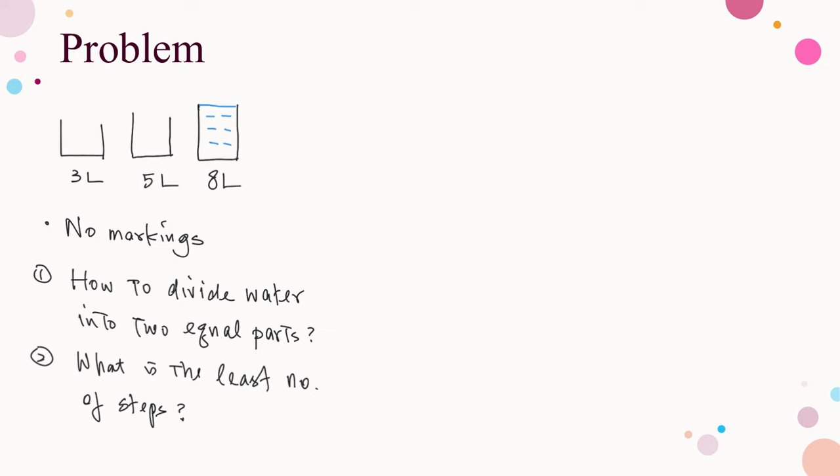This problem can be solved simply by trial and error. You may pause the video and try on your own first so that you have a better idea about the problem. During your trial, you might come across the situation of going back to some previous state. Yet we are asked to divide the water into two equal parts with the least number of steps, so some steps in the trial might need to be removed.